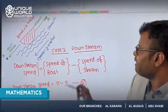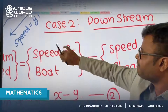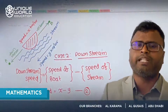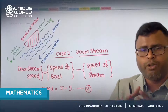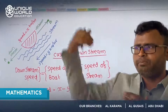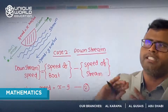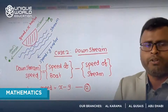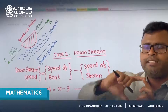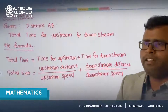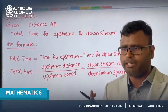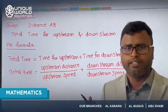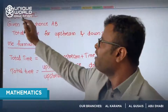Now let's consider the upstream case, where the boat is moving upward. In this case, the water flowing downward blocks the boat, so it moves slower than usual. Therefore the total speed of the boat going upstream is the speed of the boat minus the speed of the stream: upstream speed = x − y. The blocking effect reduces the speed, just as when someone is blocking you while you move forward.